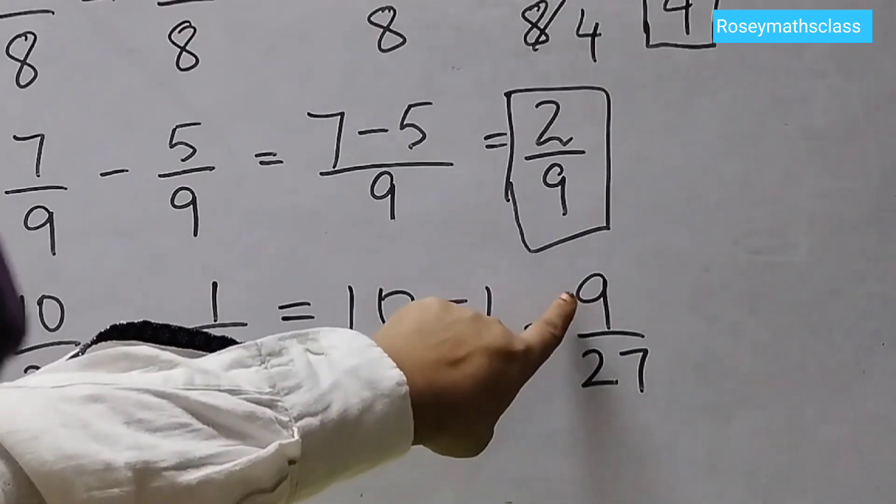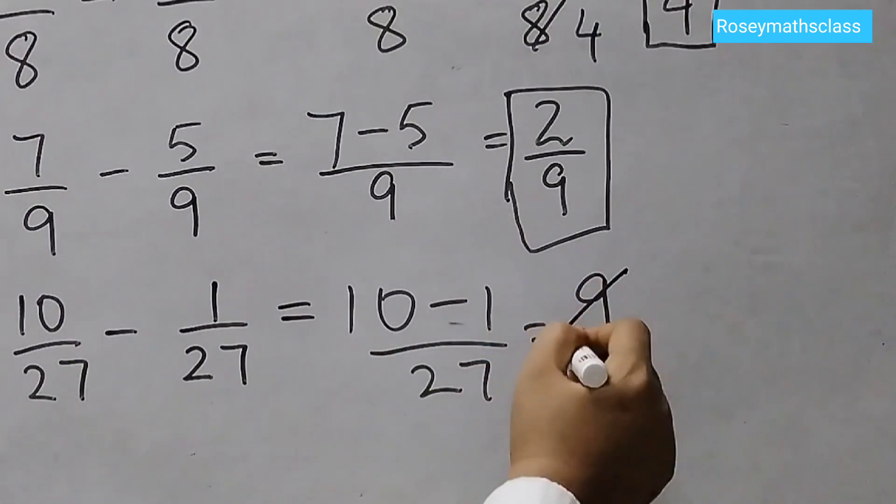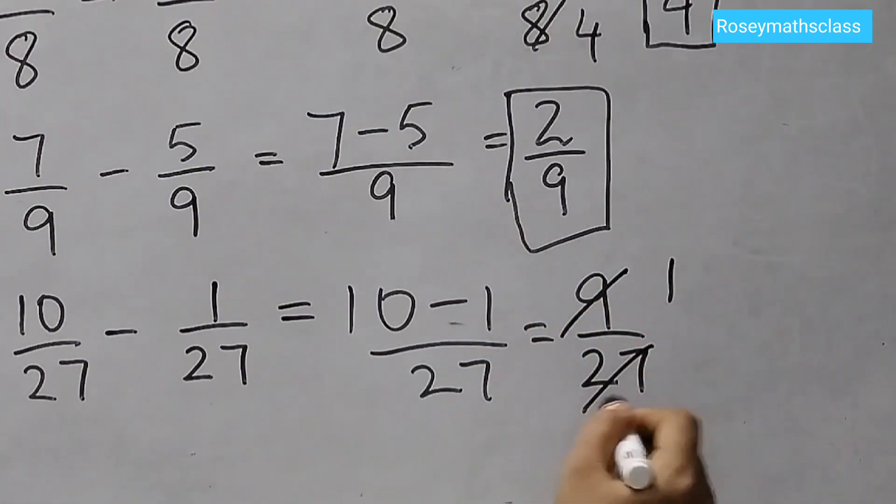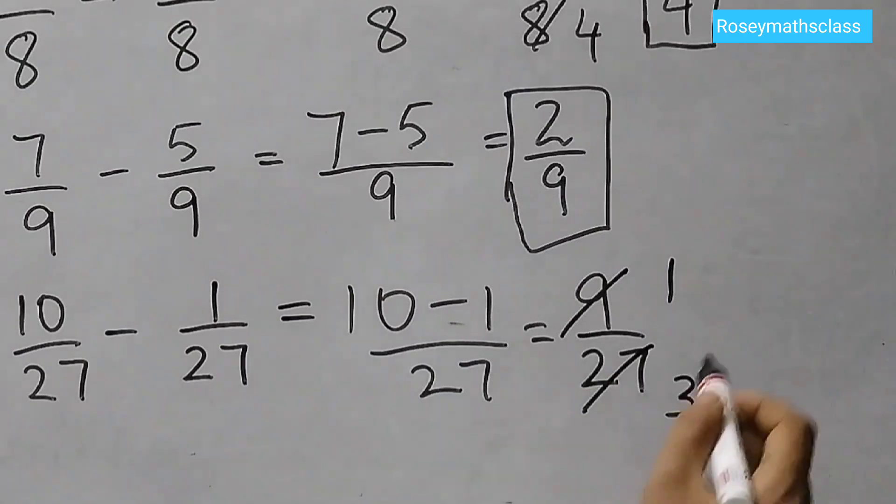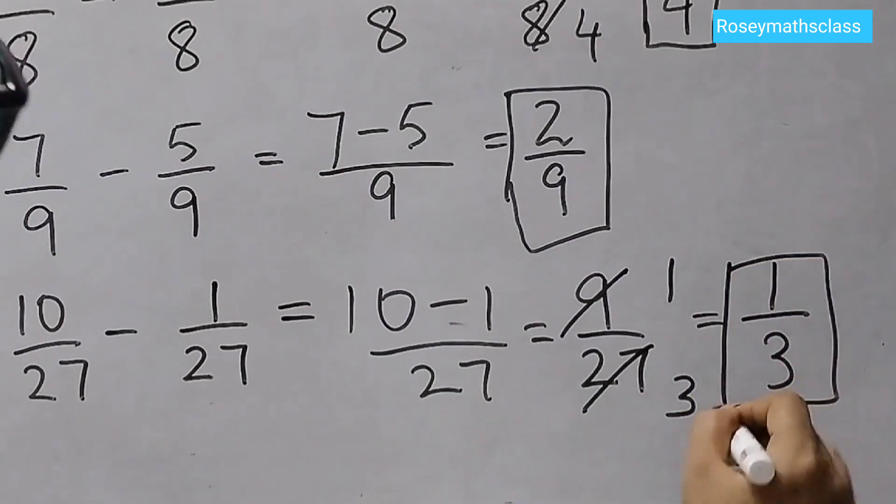We have 9 and 27. 27 is in the table of 9, so we will do 9 ones are 9, 9 threes are 27. So the answer is 1 by 3. So these were very simple problems which are given on page 181.